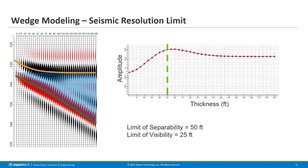We're also limited in the thickness we're able to image. If we apply seismic amplitude picking algorithms, they will continue to pick peaks and troughs but won't be able to identify whether amplitude variation is a change in geology or simply a thinning of the geology. With this, we get a limit of separability of 50 feet, meaning the limit of visibility is 25 feet. We cannot reliably ascertain information strictly from seismic amplitudes alone about the geology — we have to take other approaches.